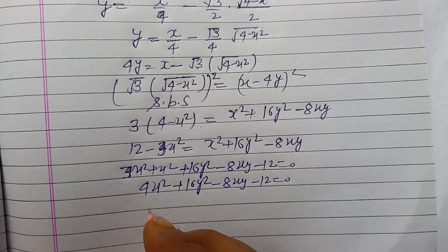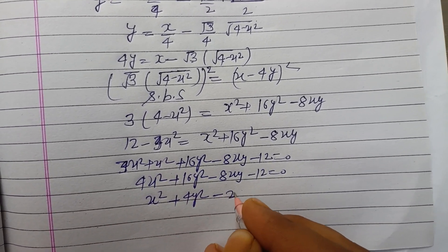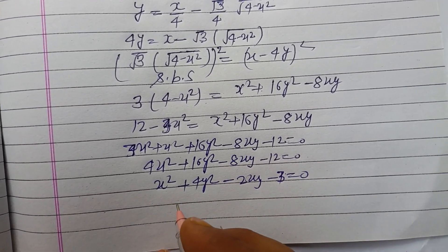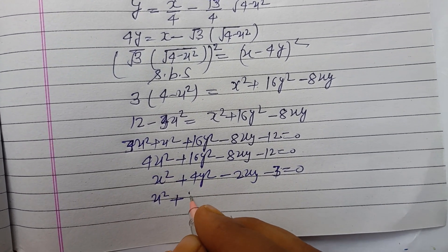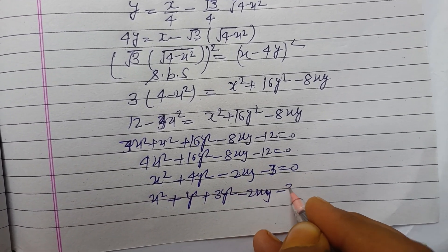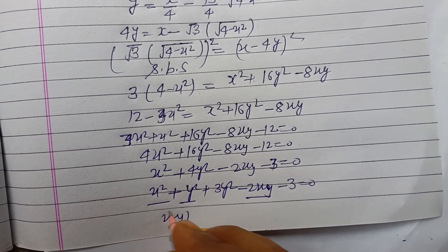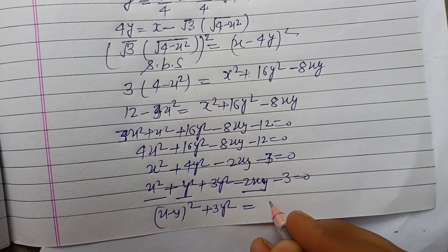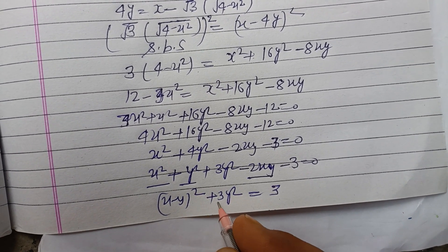4 is common in all terms, so we divide it: x square plus 4y square minus 2xy minus 3 equals 0. Now this x square plus we write 4y square as y square plus 3y square minus 2xy minus 3 equals 0. These terms become (x - y) whole square plus 3y square, and we bring this 3 towards right side, so it becomes (x - y) whole square plus 3y square equals 3.